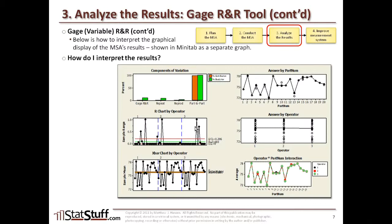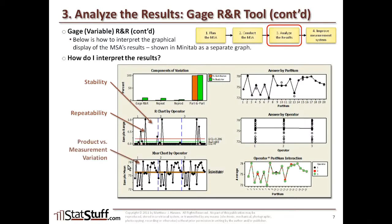Rather than explaining all of these charts, we're going to focus primarily on the bottom two. The middle one on the lower left side shows the difference in measuring stability as well as repeatability. The bottom-most chart on the left compares product versus measurement variation as well as reproducibility. These are the four characteristics we're really going to look at from these two parts of the graphs window.